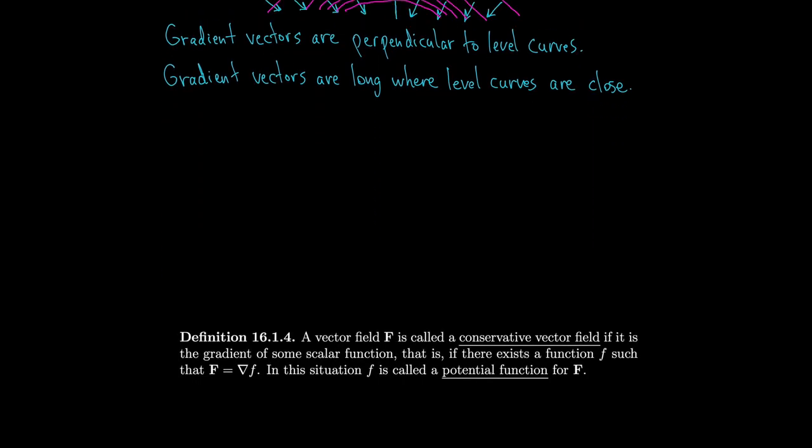Let's end with a quick definition. A vector field F is called a conservative vector field if it is the gradient of some scalar function. We might be given a vector field and want to know: did this come from some other function by taking the gradient? If it did, we call it a conservative vector field, and we call that original function a potential function for F.